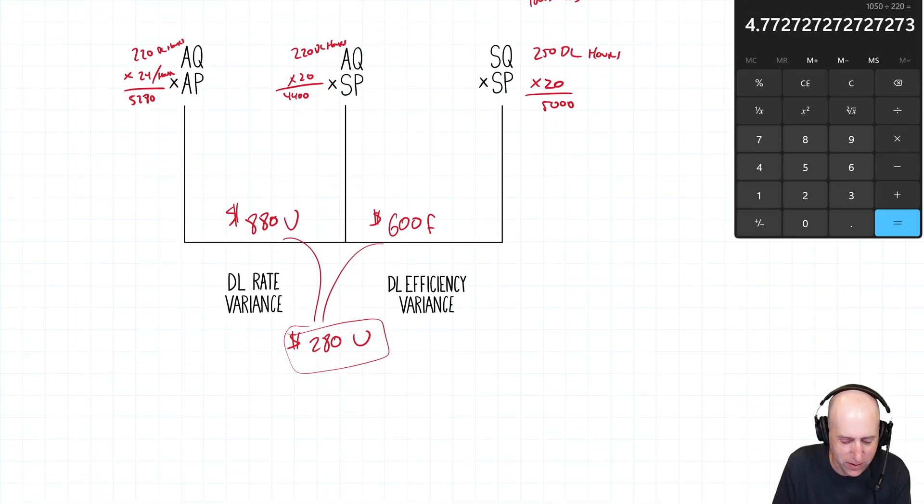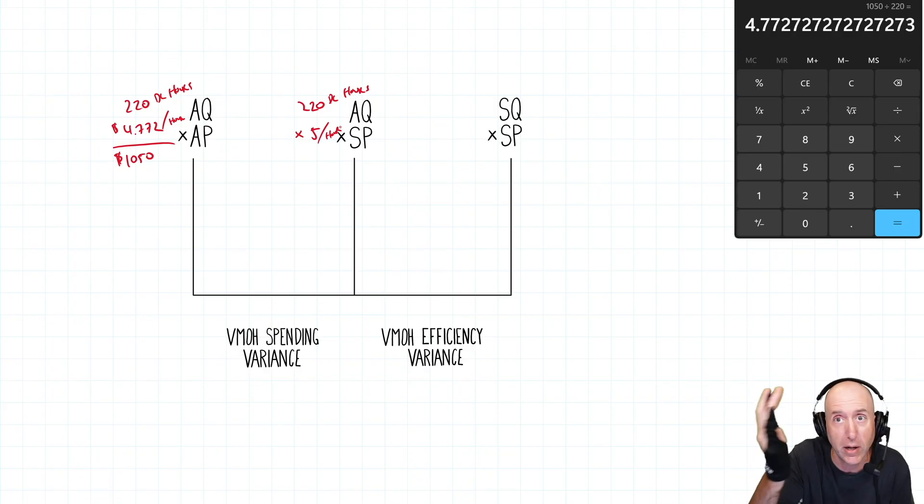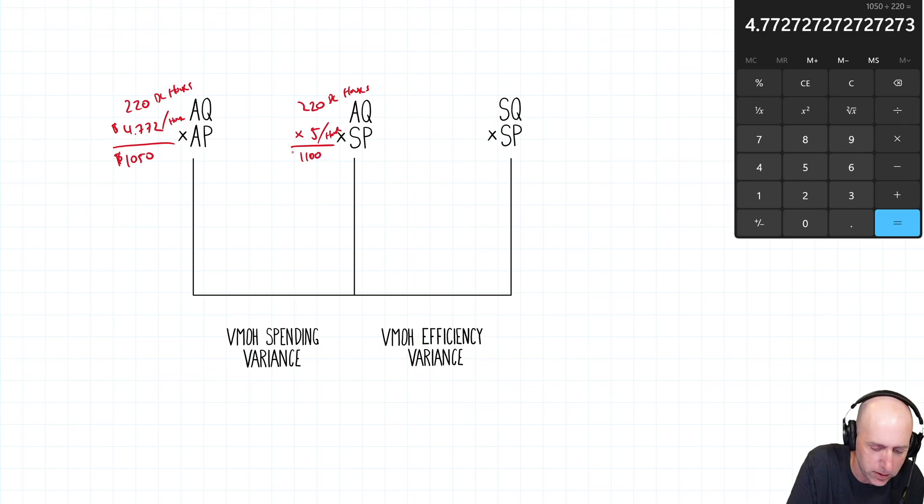So let's use the 5. Our standard price for variable overhead is $5 per hour. Now you might be saying, well, what about all that budget and actual stuff? That's for fixed. We compare budgets and actuals for fixed. 220 times 5 is $1,100. So comparing the two, we're $50 apart. Now is this favorable or unfavorable? Well, I compare the standard 220 and 220, that matches. So don't worry about that, it's the difference. Standard price, $5 an hour, and actual price, $4.70 an hour. It's less. I paid less for overhead. That's good, that's a savings. This is favorable.